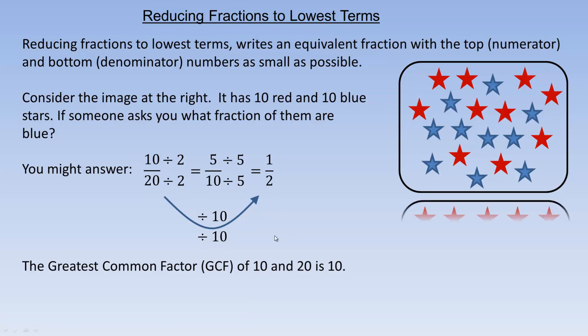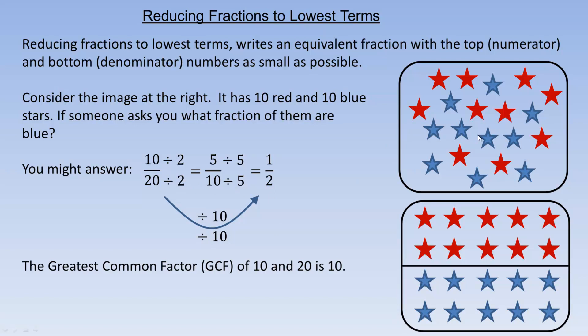If I rearrange this diagram with the red stars on top and the blue on the bottom, then divide them into two equal parts, one of the two parts is blue. That's what 1/2 means. So if somebody asks what fraction of them are blue, one of two parts — one half — are like that.